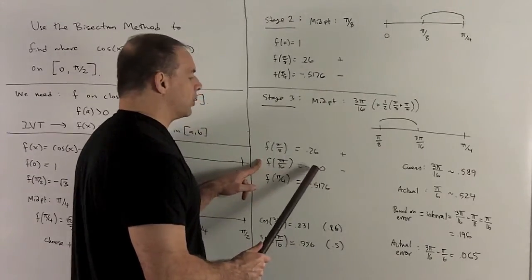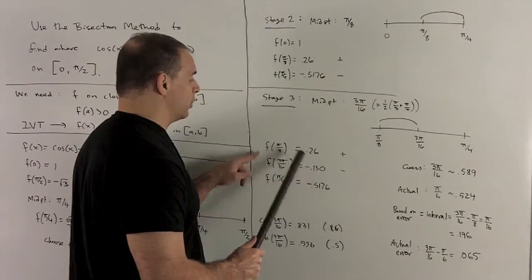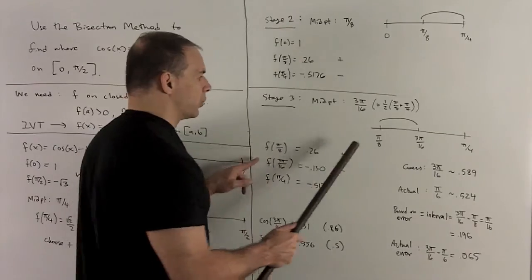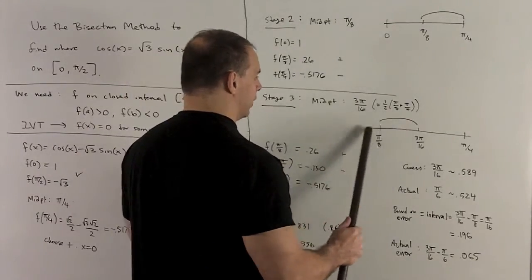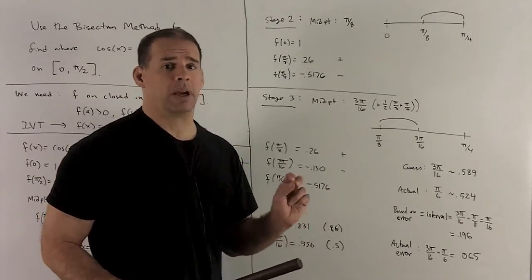That's going to be a negative value. So we're going to continue with the endpoint that has the positive value, which is π/8. So we're going to go with this interval here. And then we can go on and on. But we'll stop here.